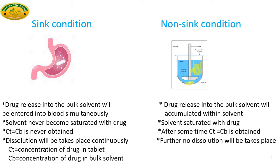Because of this accumulation, there is a saturation of the solvent with the drug. Therefore, the condition arises where Cs equals Cb — where Cs is the concentration of drug in the tablet and Cb is the concentration of drug in the bulk solvent.